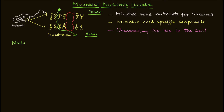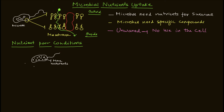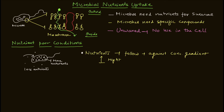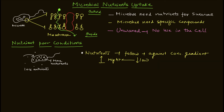We first need to understand the environmental condition where the microbe is surviving. Microbes will typically be living in a nutrient-poor condition in the environment, while inside the microbe the nutrient-rich condition will be present. Most of the time, bacteria utilize nutrients and outside bacteria there is a nutrient-poor condition. So those molecules must move from a nutrient-poor to a nutrient-rich condition — that is, against the concentration gradient, from lower to higher concentration.